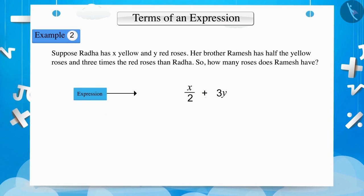In this expression also, we have two terms. The first term is X by 2 and the second term is 3Y. Thus, the factors of the first term of the expression X by 2 are X and 1 by 2 and the factors of the second term 3Y are 3 and Y.